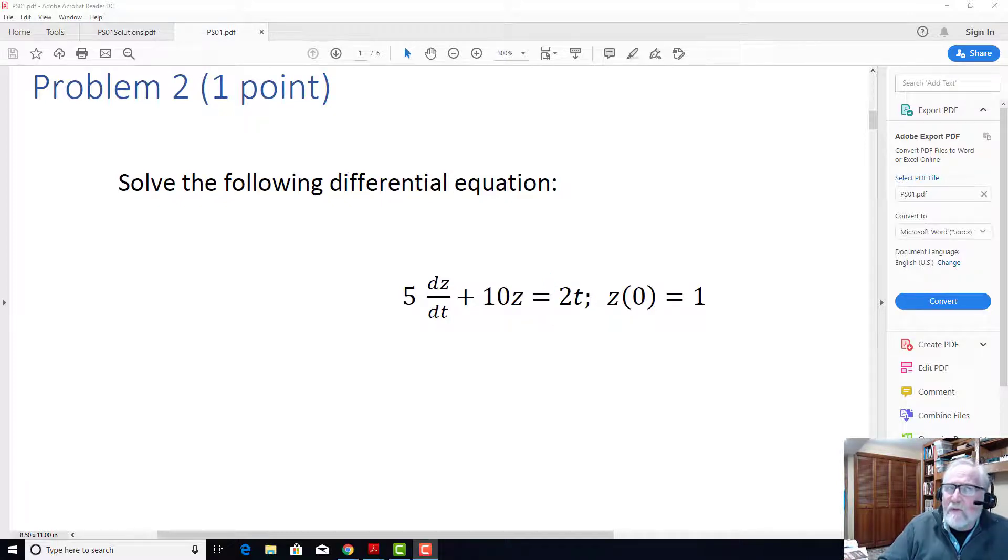I want you to start thinking about what this physically means. We have a function that is proportional to time going by, so this is what we call a ramp function. As time goes by, this function increases linearly and it has a coefficient of 2. Again, there's a single initial condition: the dependent variable z is equal to 1 at time t equal to 0.